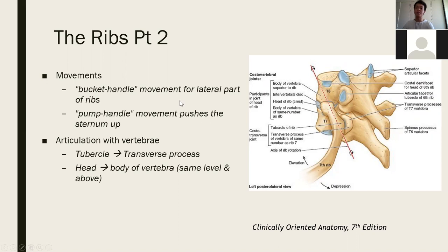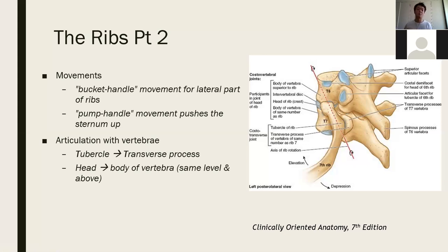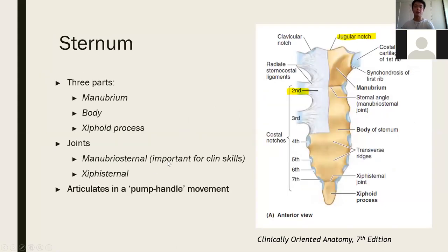There are two types of rib movements. A bucket handle movement is for the lateral part of the ribs — imagine a bucket handle that curves around and moves up and down in a circular shape. A pump handle movement is like when you pull one end of a pump, which pushes the sternum up and down. The ribs attach to the sternum, which has three parts: a manubrium at the top, a body, and the xiphoid process.